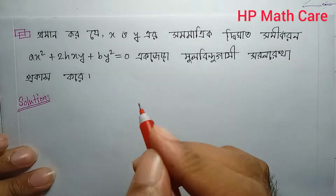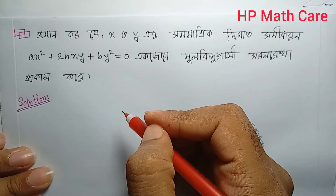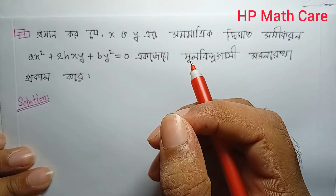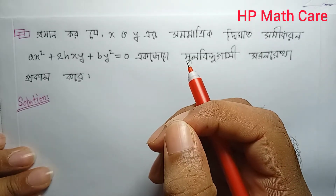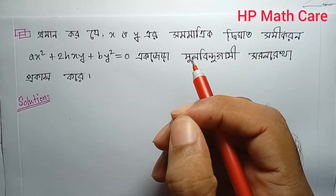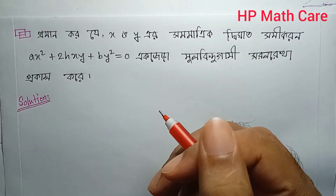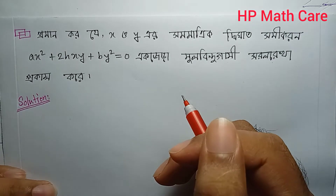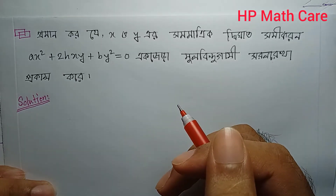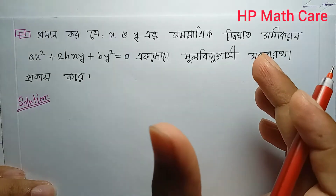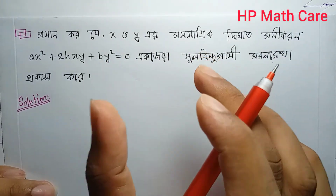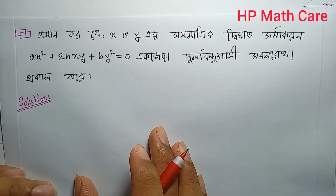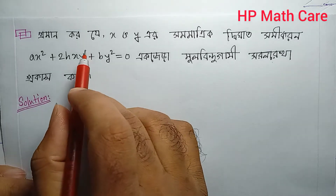Welcome. This is the second time going analytic and vector geometry — the chapter on pair of straight lines. This chapter lecture covers an important model theorem. We'll look at a key important theorem with another method based on the topic.